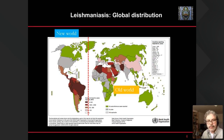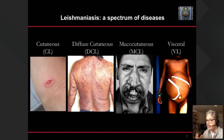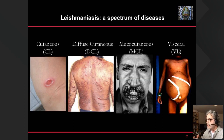Just quickly for those not familiar with leishmaniasis — this is a worldwide problem, present in both the new and old world. The disease manifests in a fascinating spectrum of different cutaneous clinical presentations, ranging from a single ulcer that may heal and never return, to diffuse cutaneous forms, or metastasizing into a mucocutaneous condition. These three conditions are not fatal but pose problems for mental health. Then there is the visceral form, which is fatal if untreated.